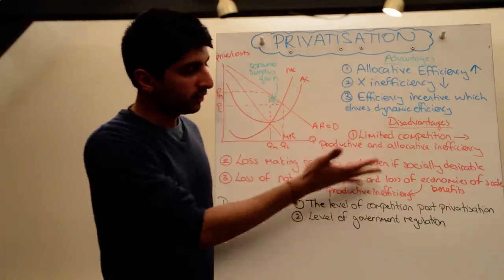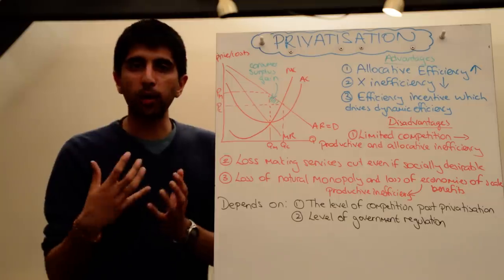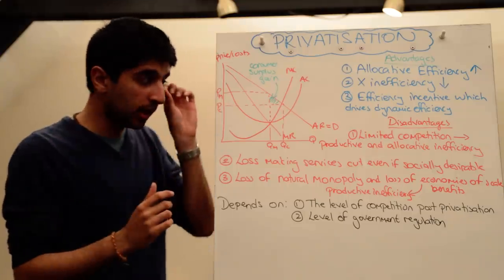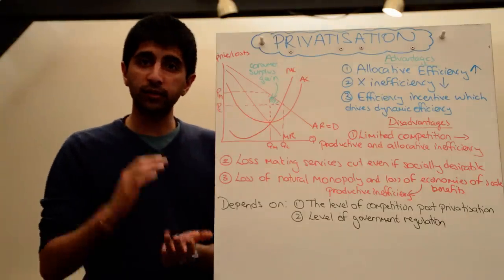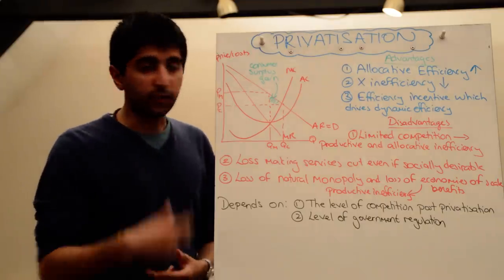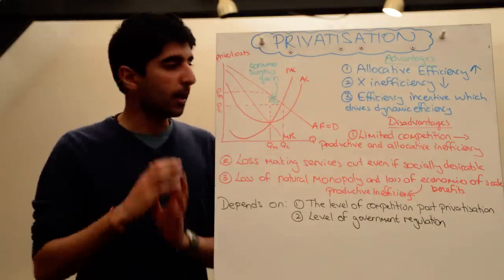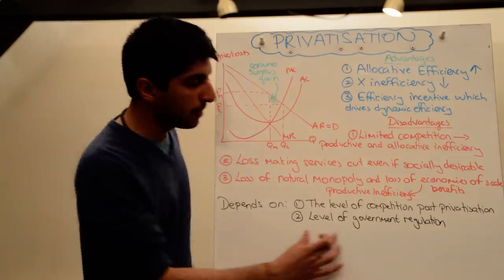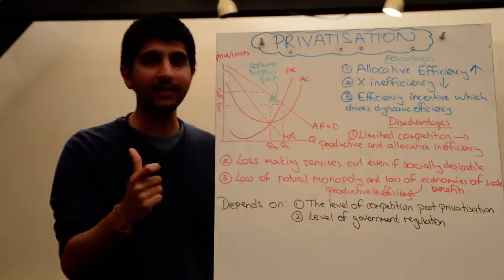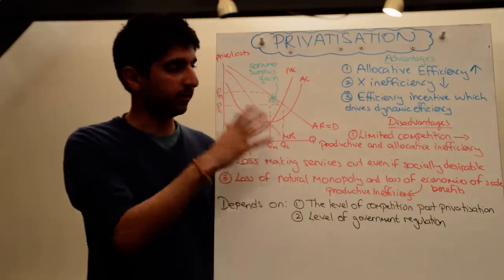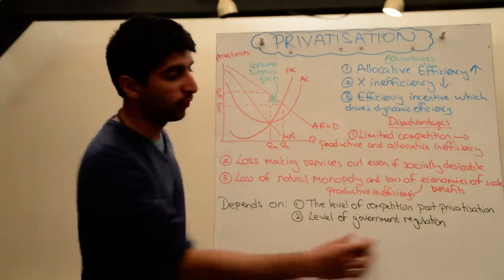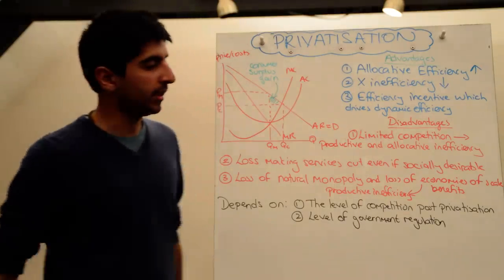Government can also regulate in terms of whether firms are forced to provide services and goods which are socially desirable. Government regulation might also be strict in terms of firms having to take into account external costs. One of the key disadvantages here is that when private firms go for profit motives and try to make the most profit as possible, they ignore external costs and external benefits. If there are negative externalities or positive externalities, private firms will not take them into account as they follow their own self-interest. But if government regulation is high and tight, they might force firms to take them into account, maybe by imposing taxation, maybe by regulating very severely, or whatever it might be.